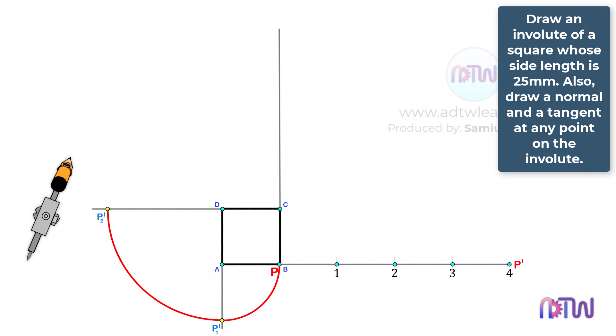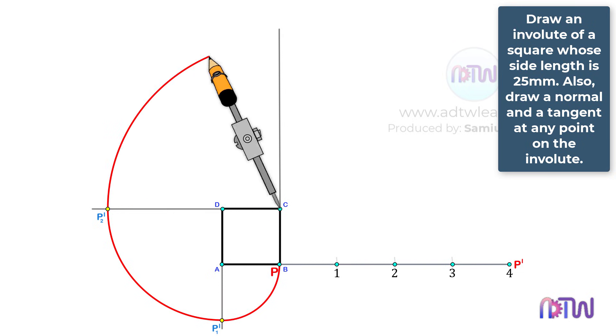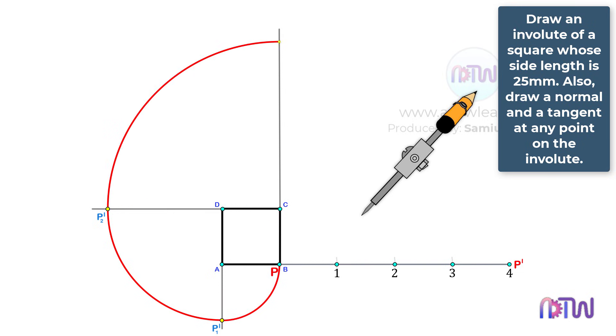Adjust the compass to the length between points C and P2, and using point C as a center, draw an arc from point P2 to this line. Label this point as P3.